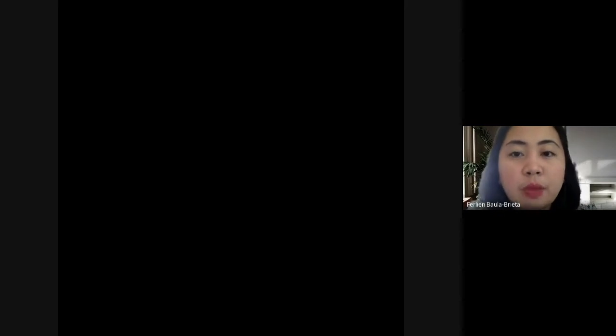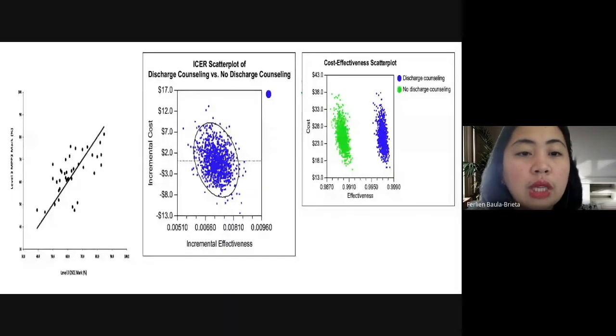Scatter plot, as I have mentioned a while ago, is related to the line graph. So a scatter plot, or scatter chart, or scatter graph, it uses dots to represent values for two different numeric variables. So the position of each dot on the horizontal and vertical axis indicates the values for an individual data point.